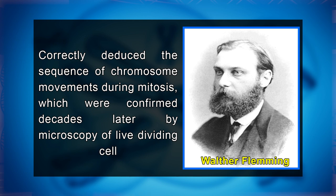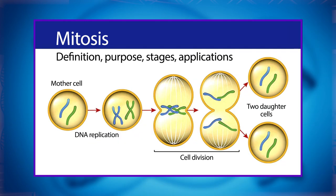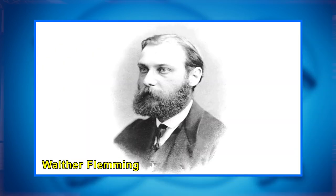Fleming noted that during cell division, the chromatin formed thread-like bodies which he termed mitosin, from the Greek word for thread. Based on many observations of cells in various stages of division, Fleming correctly deduced the sequence of chromosome movements during mitosis, which were confirmed decades later by microscopy of live dividing cells. Fleming also made the important observation that chromosomes split along their length during mitosis and correctly hypothesized that the split chromosomes were partitioned into different daughter cells at the end of mitosis. Thus, Fleming recognized that chromosomal movements during mitosis offered a mechanism for the precise distribution of nuclear material during cell division.